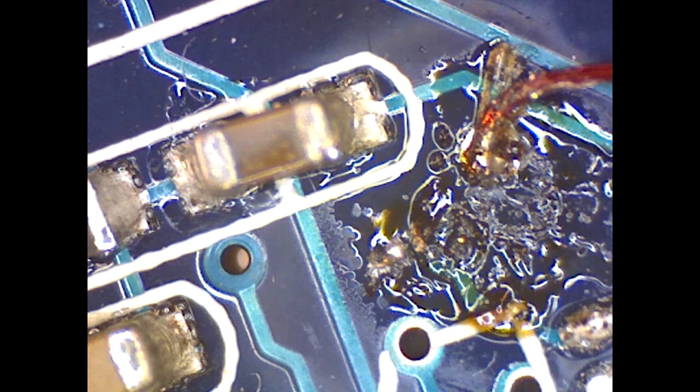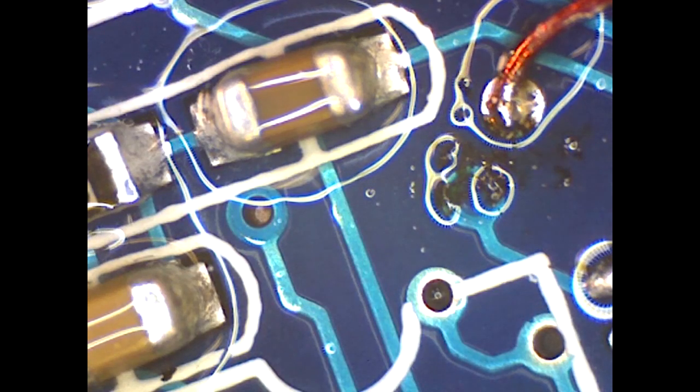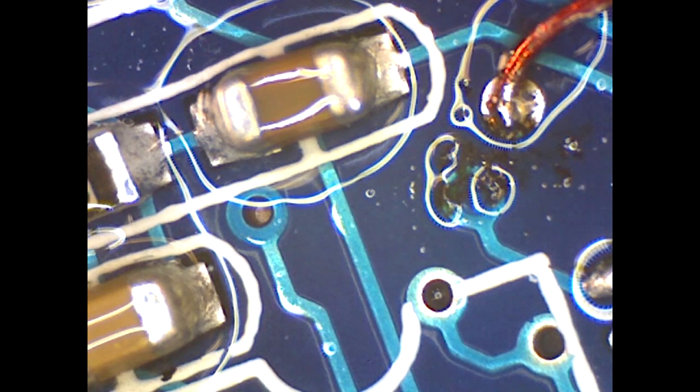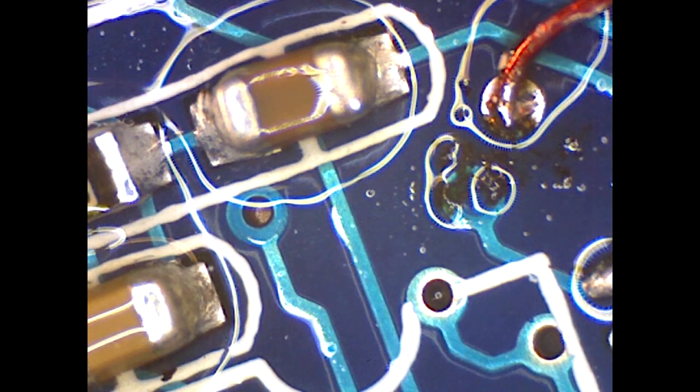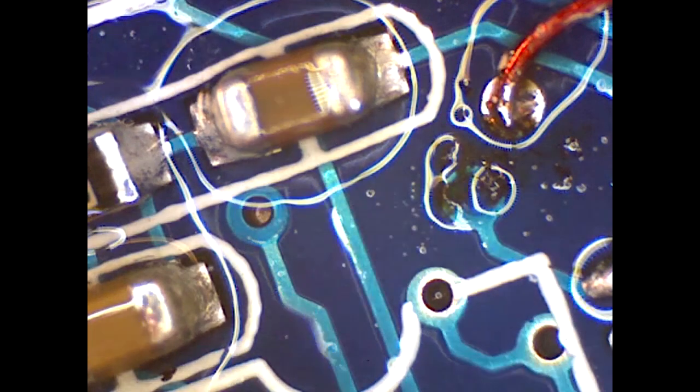Now it looks a bit grubby because I'm using rosin-based core and not no-clean solder. I do find the stuff with the rosin core delivers better results, but if you don't like the rosin core, you can just take a brush with some isopropyl alcohol and then puff it off with some compressed air.